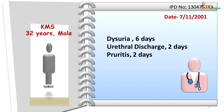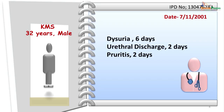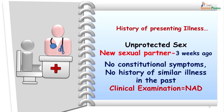This was a case of a 32-year-old male who presented with burning micturition since about a week. He also had urethral discharge which was non-purulent for the last two days, and there was itching present in the genital area. The history revealed that the patient had unprotected sex with a new partner about three weeks ago, with no constitutional symptoms and no history of similar illness in the past. On clinical examination, no abnormality was detected.